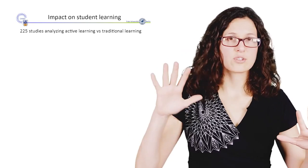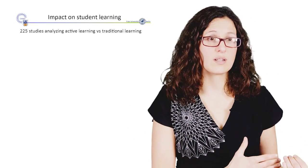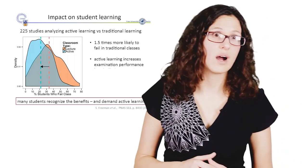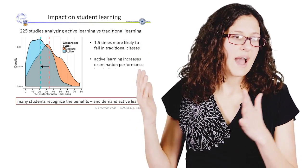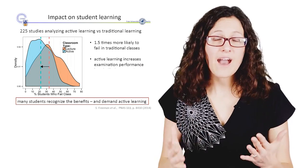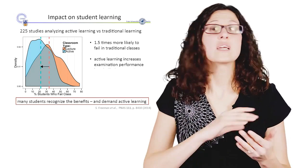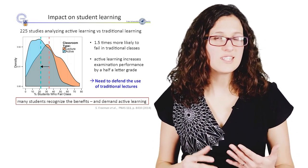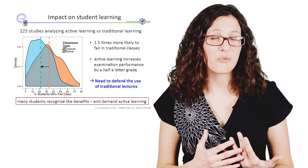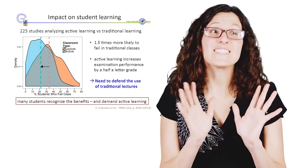And I want to just end with the impact on student learning. So this study came out in 2014 where they really looked at 225 studies analyzing active learning versus traditional lecturing. And so the students, not only are they starting to recognize the benefits, but they're starting to demand active learning. And when you look at this graph, you kind of see why. So the students, it's when you have this big shift that you see here, the active learning increases the examination performance by about half a letter grade. That's a substantial gain consistent throughout the literature. At this point, you almost need to argue or defend why are we even using traditional lectures, at least exclusively.